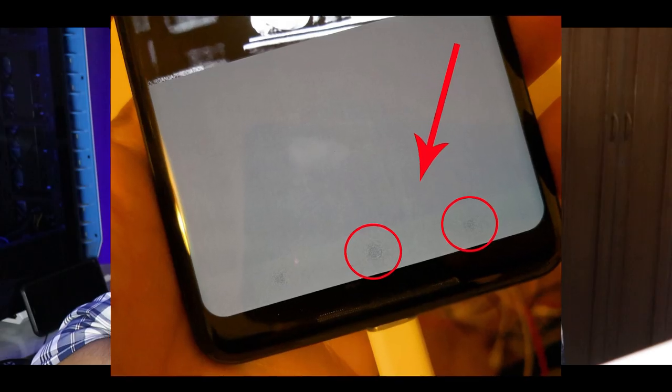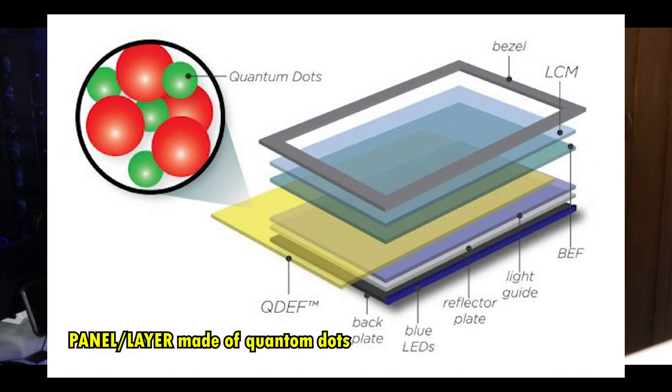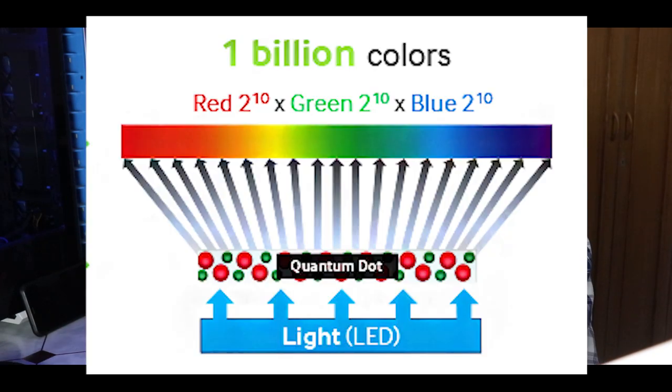Inside OLED there is a burn-in issue, so Samsung stopped making OLED TVs and said they would build their own TV technology. Samsung created a quantum dot TV. In QLED, there is a layer of quantum dots — tiny micro particles — placed on top of an IPS-like panel. When backlight comes from behind, it passes through the quantum dot layer. This is what QLED is.